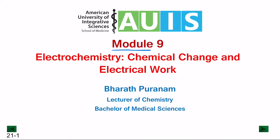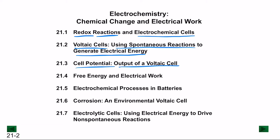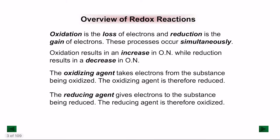Welcome to Module 9, which covers electrochemistry: chemical change and electrical work. The outline includes redox reactions and electrochemical cells, voltaic cells using spontaneous reactions to generate electrical energy, cell potential, free energy and electrical work, electrochemical processes in batteries, corrosion, and electrolytic cells where electrical energy drives non-spontaneous reactions.